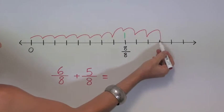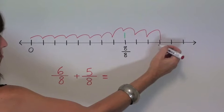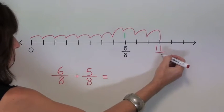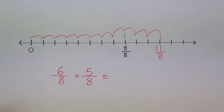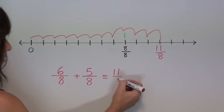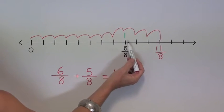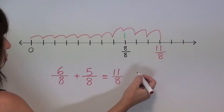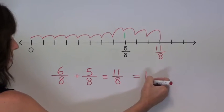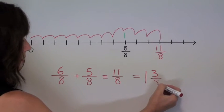Here I have landed on 11 if I count them: 8, 9, 10, 11. So I've landed on 11 eighths. So my answer to this sum is 11 eighths. Now it can also be written as a mixed numeral. You can see I've reached 1 with 1, 2, 3 more left over. So that is the same as saying 1 and 3 eighths.